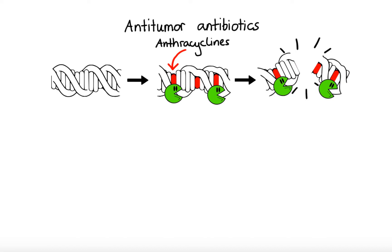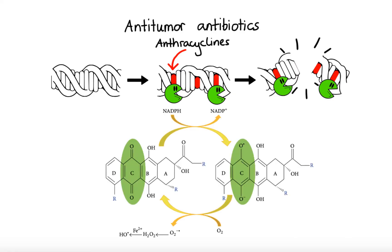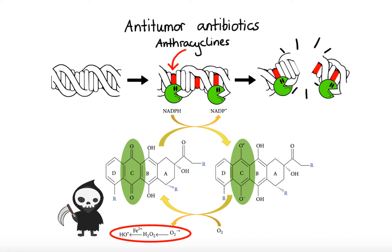As a secondary mechanism, in the presence of oxidoreductive enzymes and iron, the quinone portion of the anthracycline molecule can undergo redox reactions to generate highly reactive free oxygen radicals. Excessive amounts of these free radicals damage cell membranes, proteins, and lipids, and also trigger cell apoptosis. Examples of anthracycline antibiotics include doxorubicin, daunorubicin, epirubicin, and idarubicin.